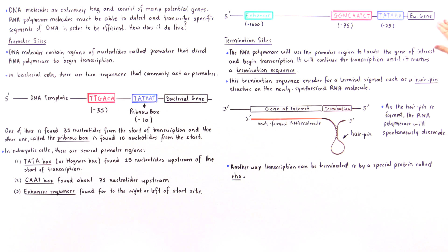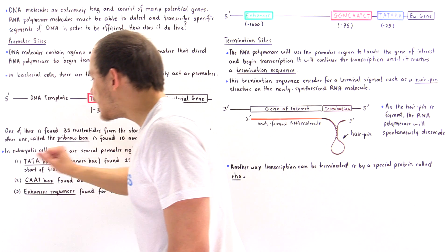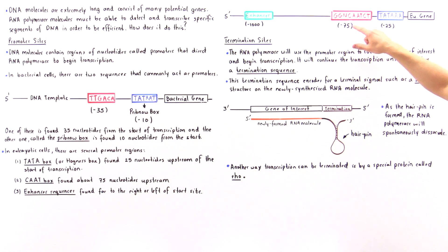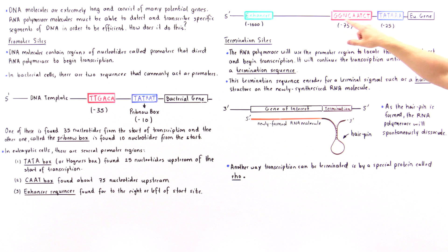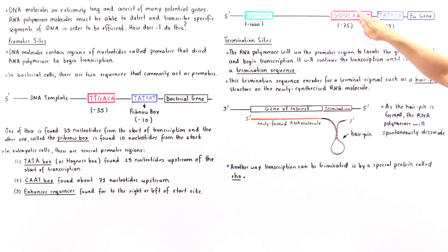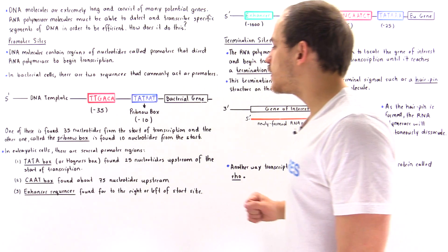We also have a CAAT box, named because it has a consensus sequence C-A-A-T. The full consensus sequence is G-G-N-C-A-A-T-C-T, but the C-A-A-T portion is why we call it the CAAT box.